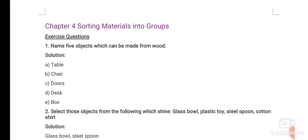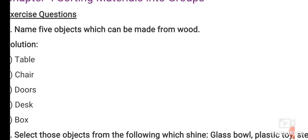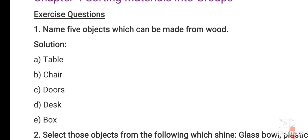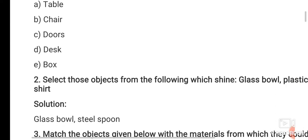Hello children, we have completed Chapter 4, Sorting Materials into Groups. Here are the exercise questions. The first question is very easy. Name five objects which can be made from wood. So here is the answer - you can change the answer also. You have to write the objects made of wood: table, chair, doors, desk, box, etc.